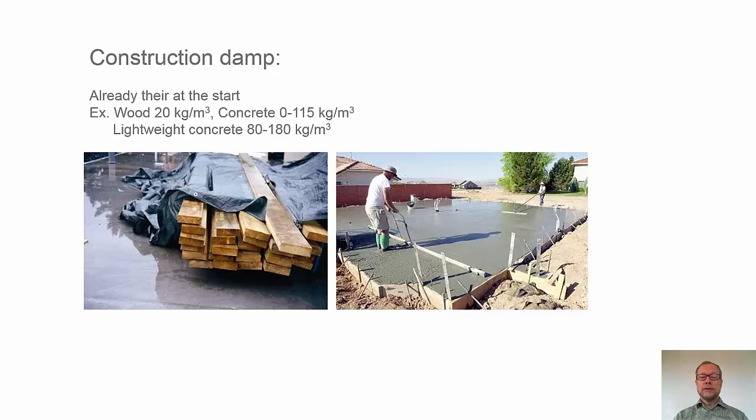Also, blocks of lightweight concrete. It's normally very wet, so to speak, and contains a lot of water, a lot of moisture. And we talk about 80 to 180 kg per cubic meter. So, in a regular villa, we can talk about 2,000 kg of moisture in the form of construction damp that has to be dried out.